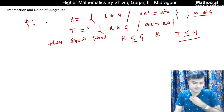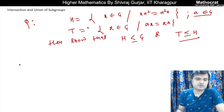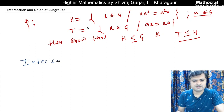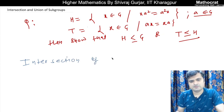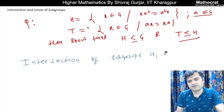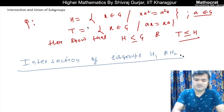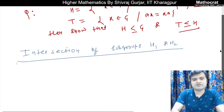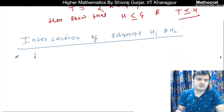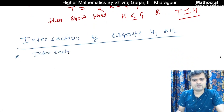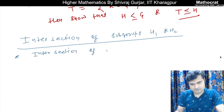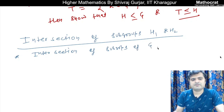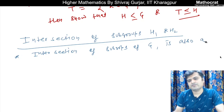Intersection and union of subgroups. Let's do the intersection of subgroups. Intersection of subgroups — H1 and H2. The intersection of subgroups is also a subgroup. The intersection of subgroups of G is also a subgroup.